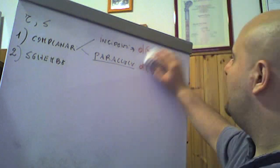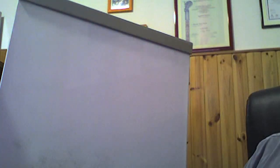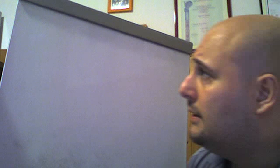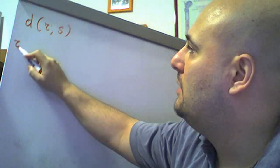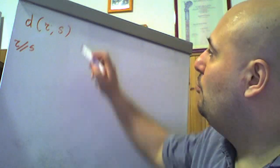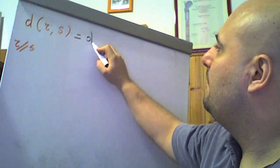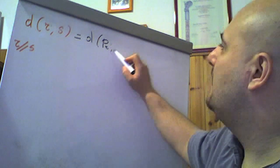Parliamo del caso di due rette distinte parallele. Se le rette sono parallele, è evidente che la distanza dalla retta R alla retta S si può ricondurre alla distanza di un qualunque punto di R da S. In generale, la distanza fra due rette R ed S, dove per ipotesi R è parallela ad S, è pari alla distanza di un punto P di R dalla retta S.